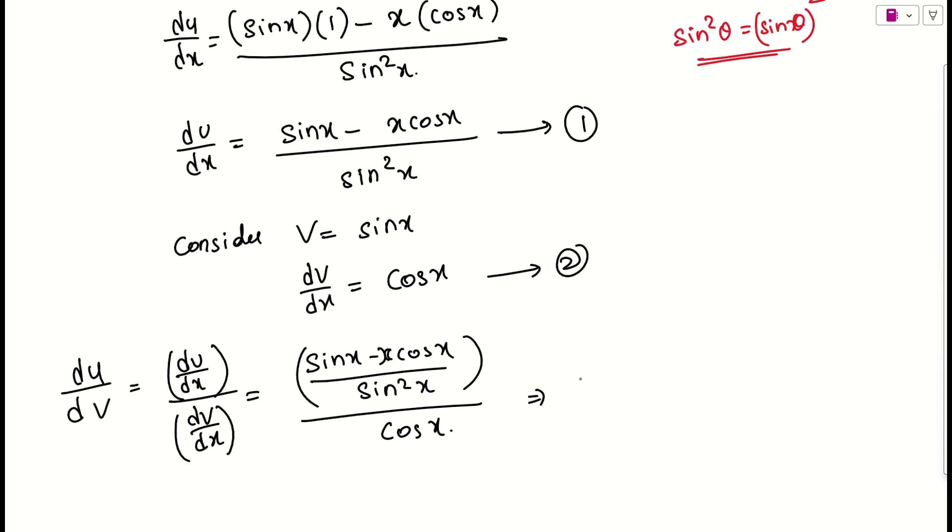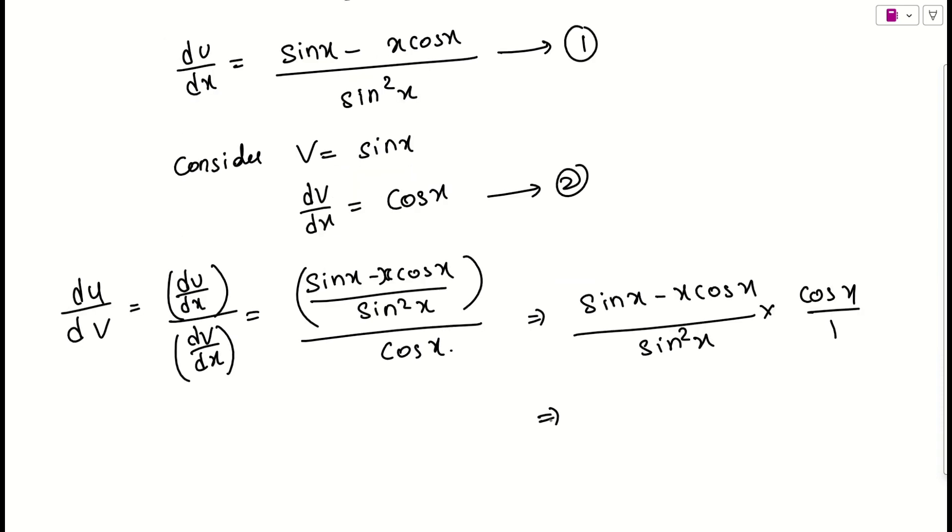So what I can do? Simply I can rewrite it as sin x minus x cos x by sin square and simply I can take the reciprocal. This is cos x by 1. From this what we can say? Easily I can write this thing into the known format.